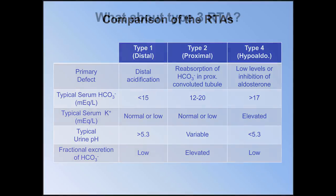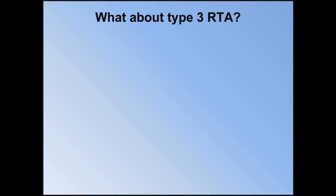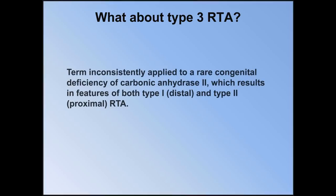Urine pH is usually inappropriately high with type 1, variable with type 2, and typically appropriately low with type 4. Finally, fractional excretion of bicarb — which is an uncommonly ordered test unless one is attempting to specifically confirm a diagnosis of type 2 RTA — is elevated in that circumstance but otherwise low. The term type 3 RTA is inconsistently applied to a rare congenital deficiency of carbonic anhydrase 2, which results in features of both type 1 and type 2 RTA. The vast majority of clinicians, and certainly no one outside of pediatrics and genetics, ever needs to worry about it.